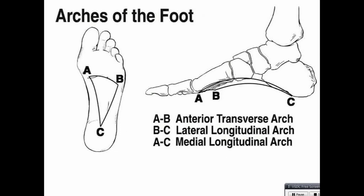There are two arches of the foot: a longitudinal arch and a transverse arch. The longitudinal arch can be lateral longitudinal arch and medial longitudinal arch. The medial longitudinal arch is represented by A to C, and B to C is the lateral longitudinal arch. A to B is the transverse arch. These arches — both transverse and longitudinal — are required for us to walk on uneven surfaces.